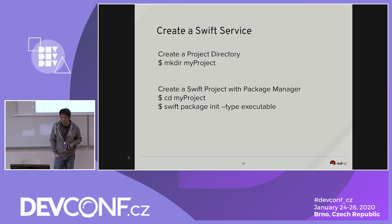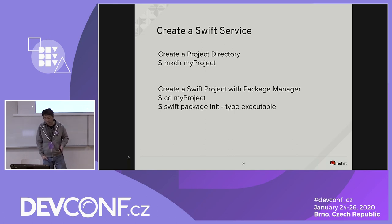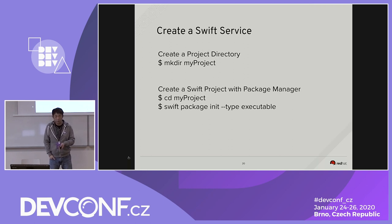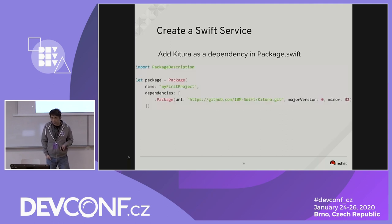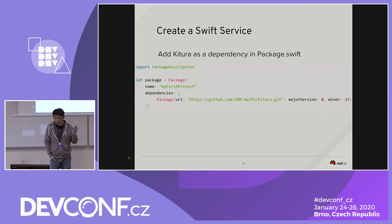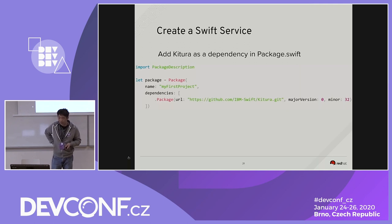Creating the Kitura Swift project is also straightforward. First you make a project directory using mkdir and your project name. Then you go into that project and run the Swift package command: swift package init, giving it a type of executable. This generates a Package.swift file where in your dependency block you add a package pointing to the IBM Kitura git URL.